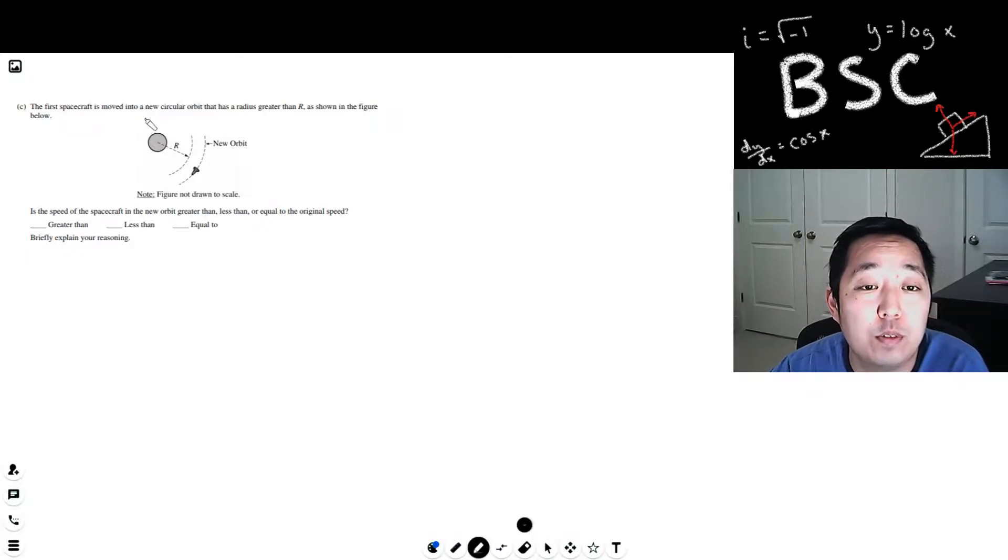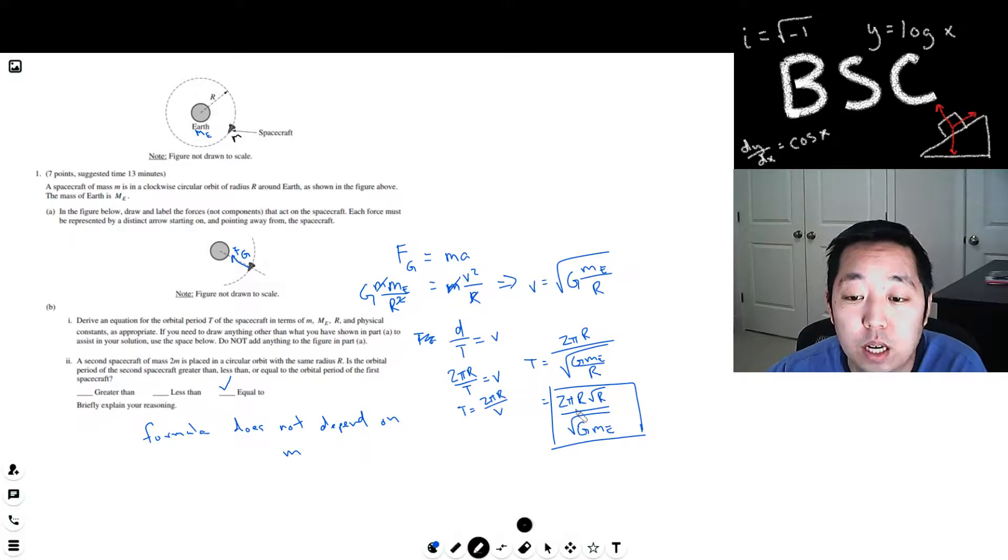The first spacecraft has now moved into a new circular orbit that has a radius greater than R, as shown in the figure. Is the speed of the spacecraft in the new orbital greater than, less than, or equal to the original speed? Let's look at our formula. I increase R and nothing else changes. Oh, oh, actually this is asking about velocity. Ah, tricky. You see, this is the period equation. I need to look at the velocity equation.